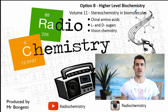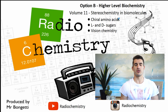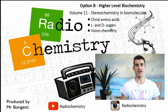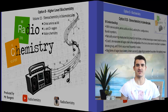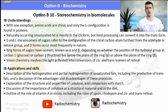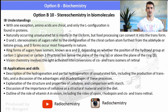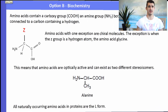Volume 11: Stereochemistry in Biomolecules. We need to look at chiral amino acids, L and D sugars, and some vision chemistry. There are quite a few IB understandings and applications, so make sure you have a read. We'll cover them off in this video, but make sure you do understand them because the IB could target them.